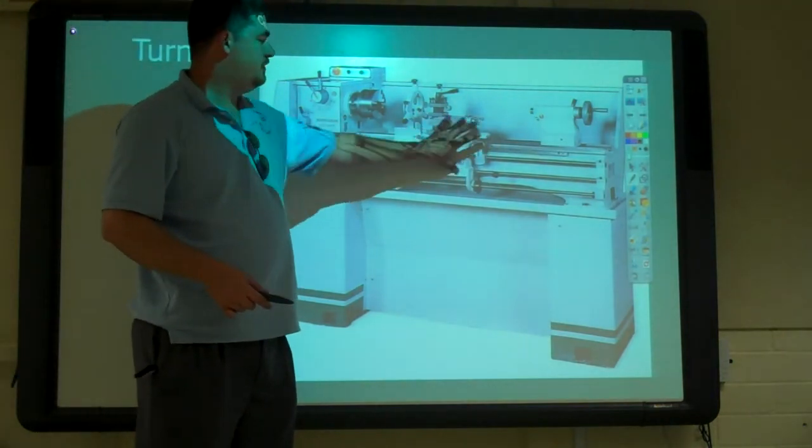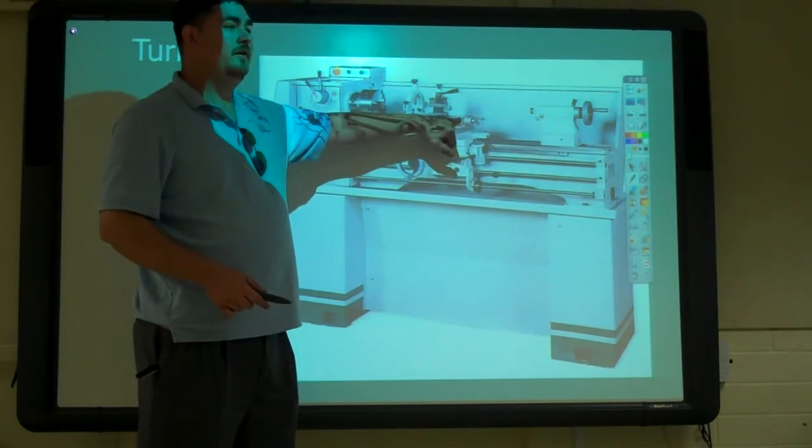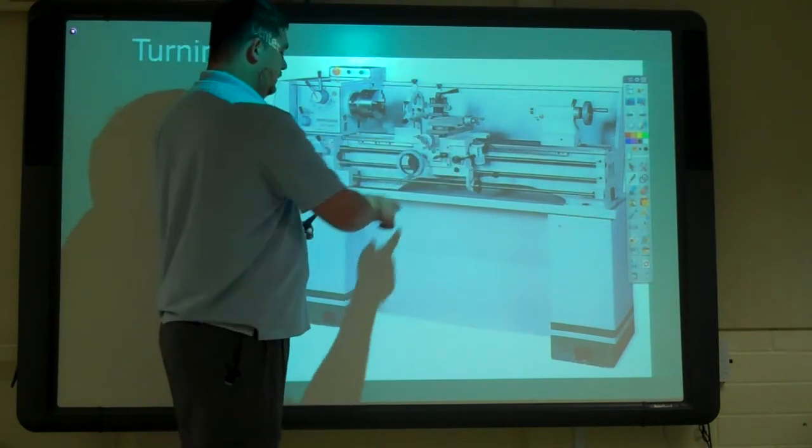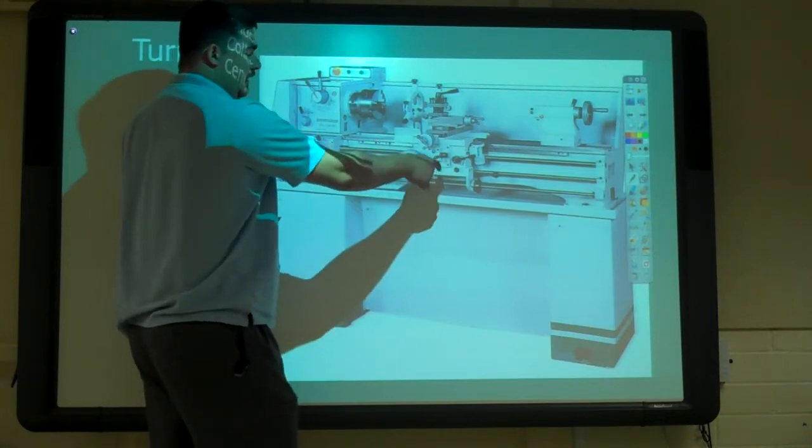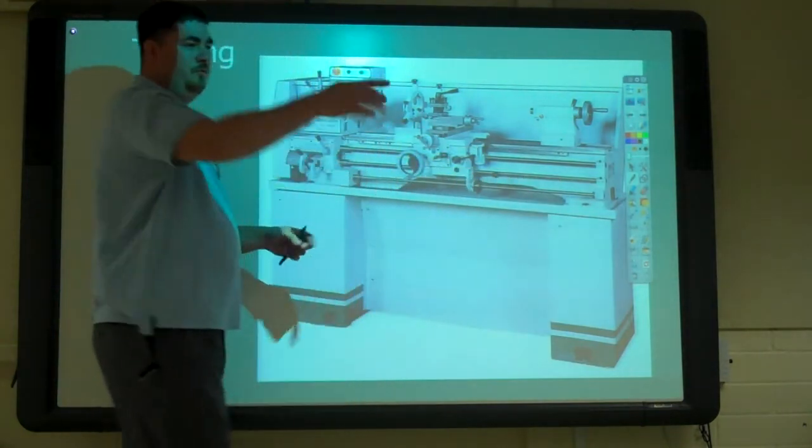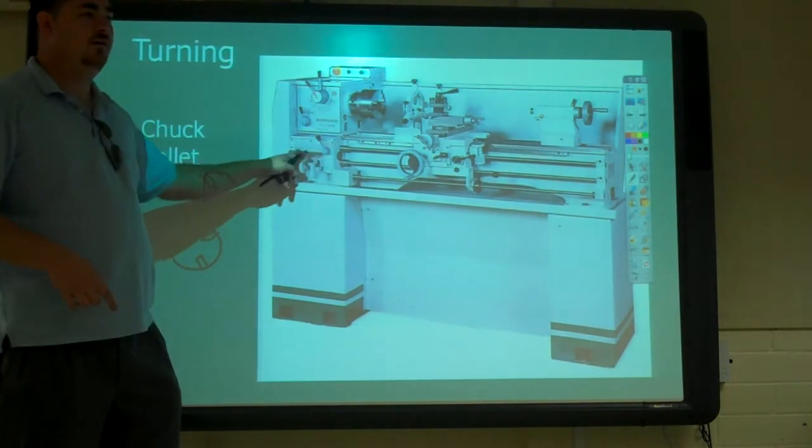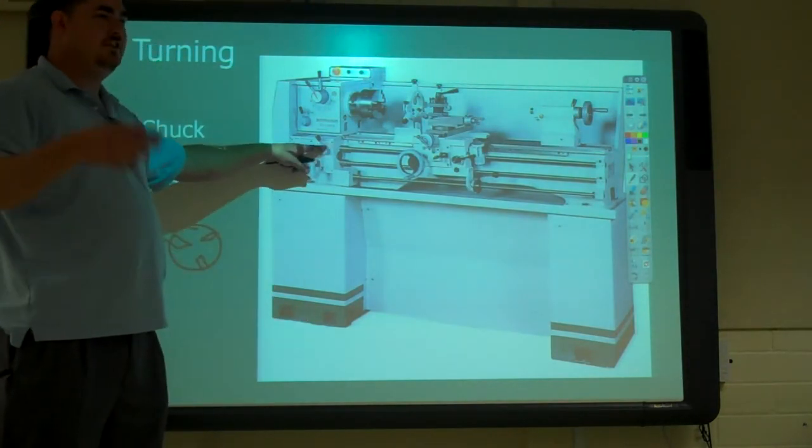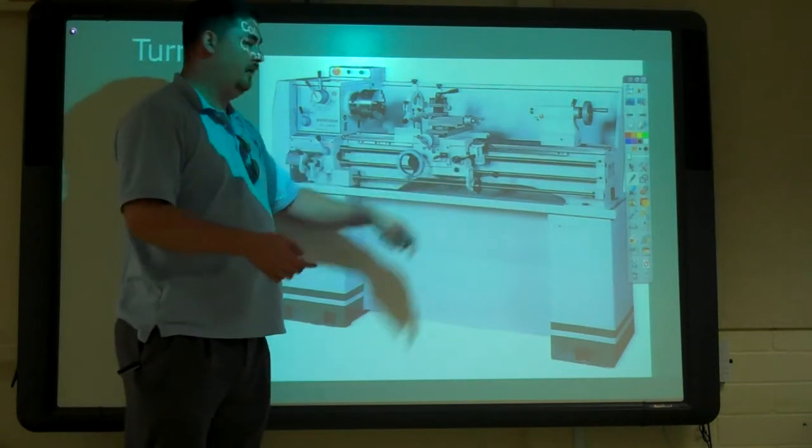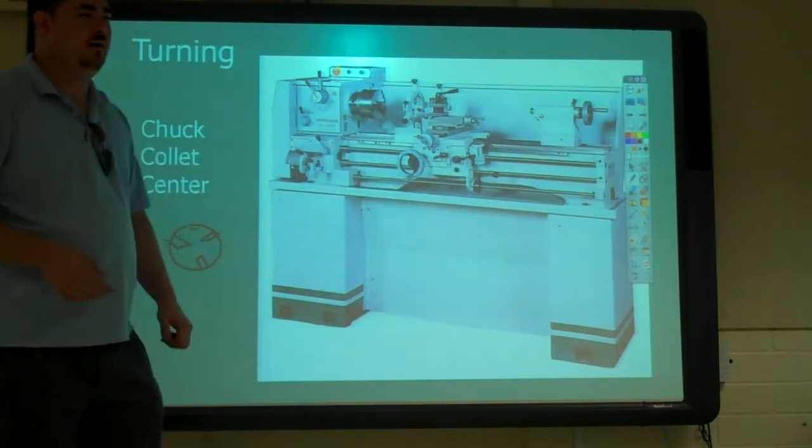This right here is the carriage. It has a tool holder here. And so, the carriage, you can move manually or you can lock it to the lead screw and it'll move at whatever rate you've set over here. So, you can set it up so that it's going to be so many inches a minute and then you just hit the lever and it'll start moving along with that at that rate.